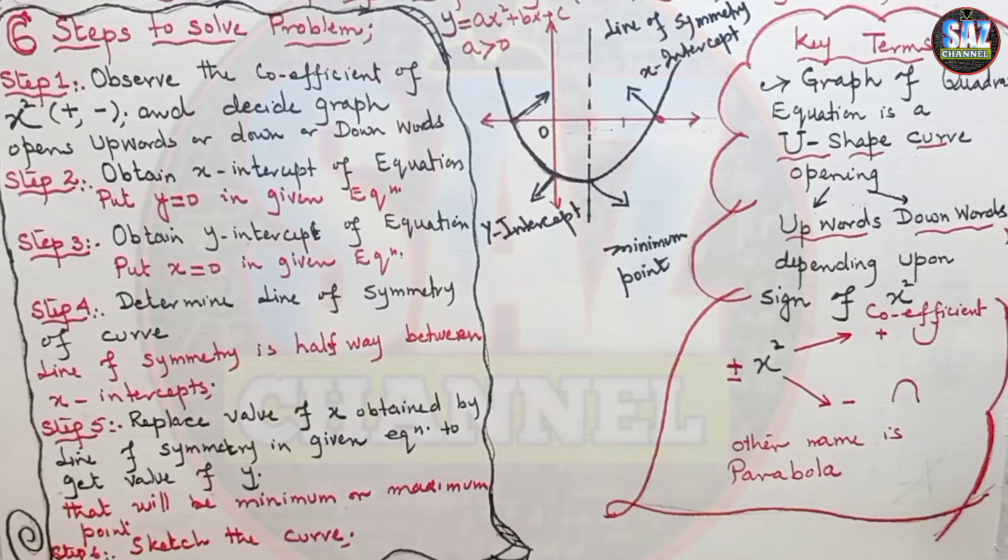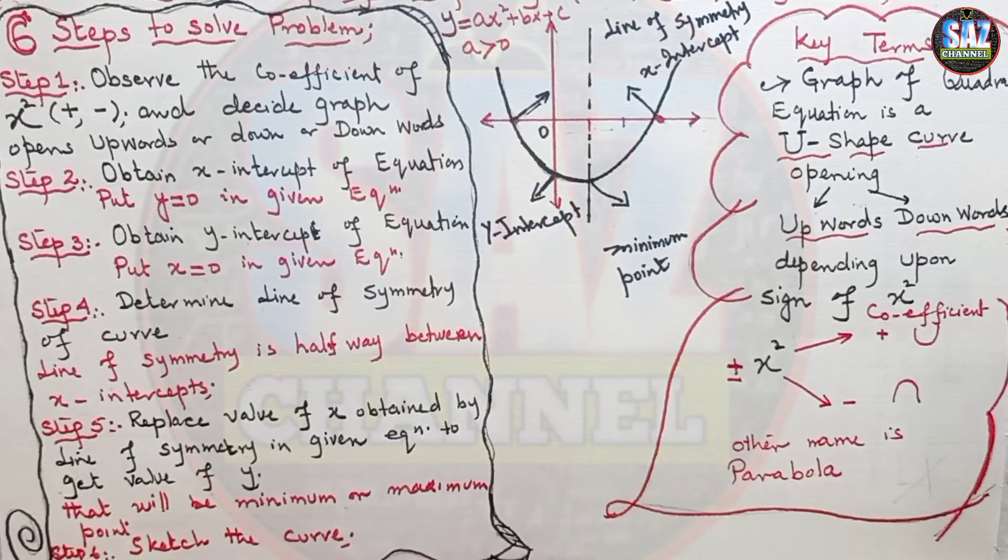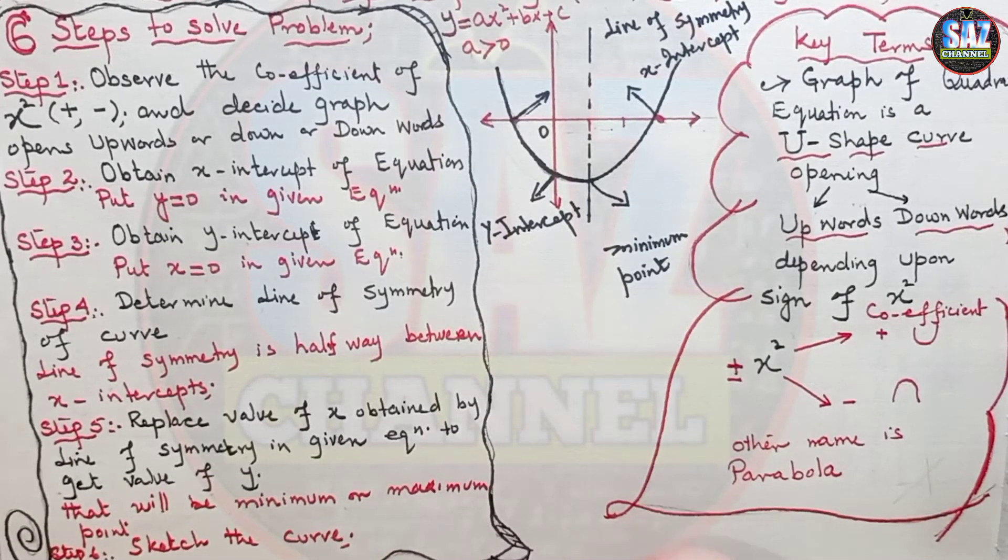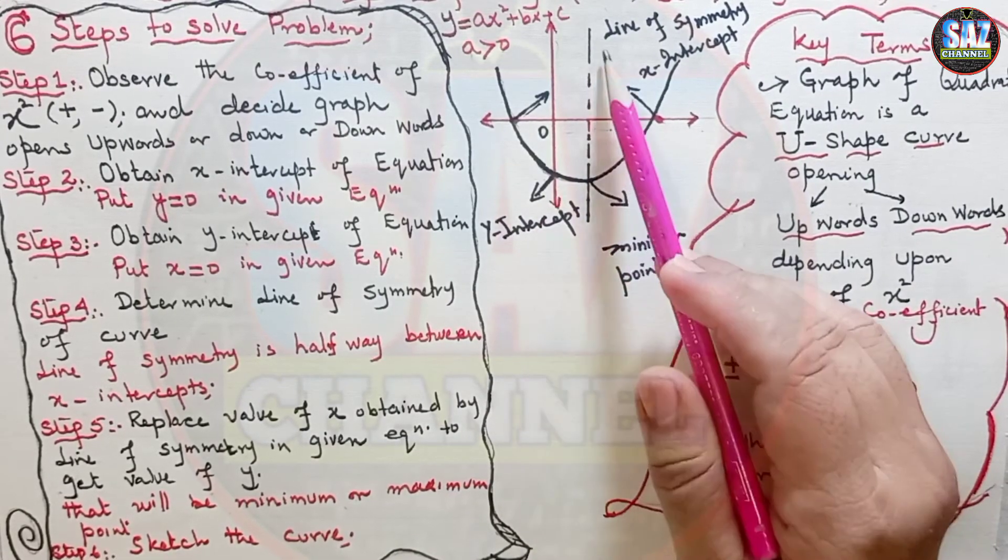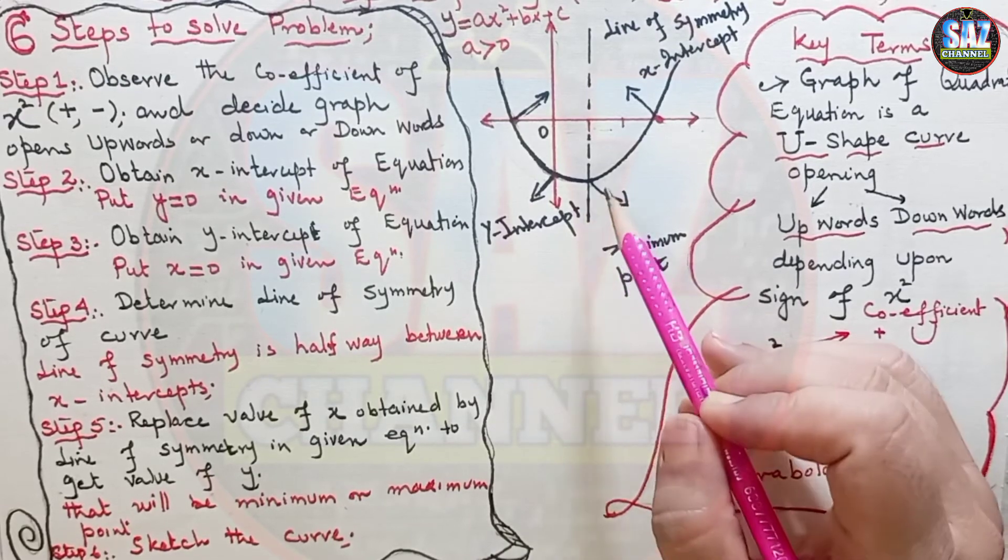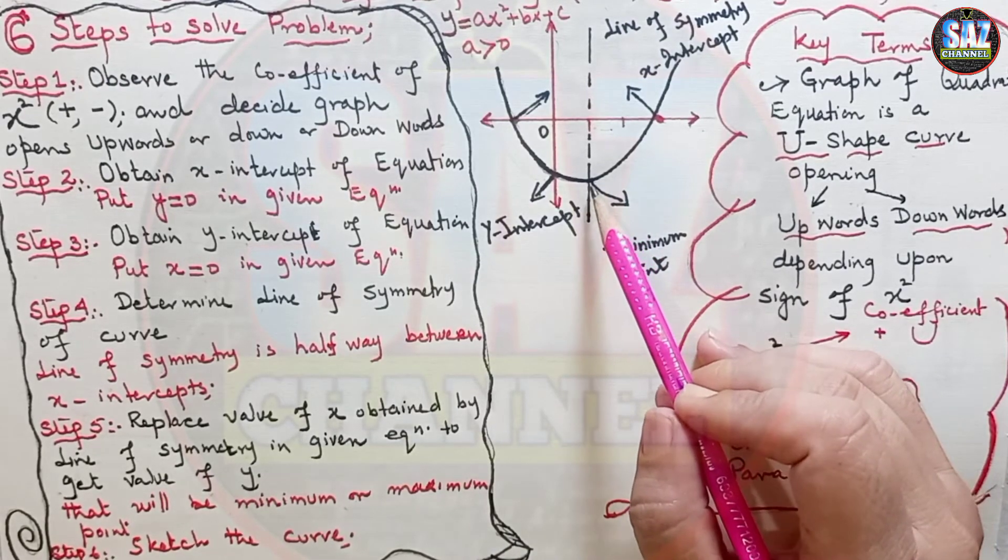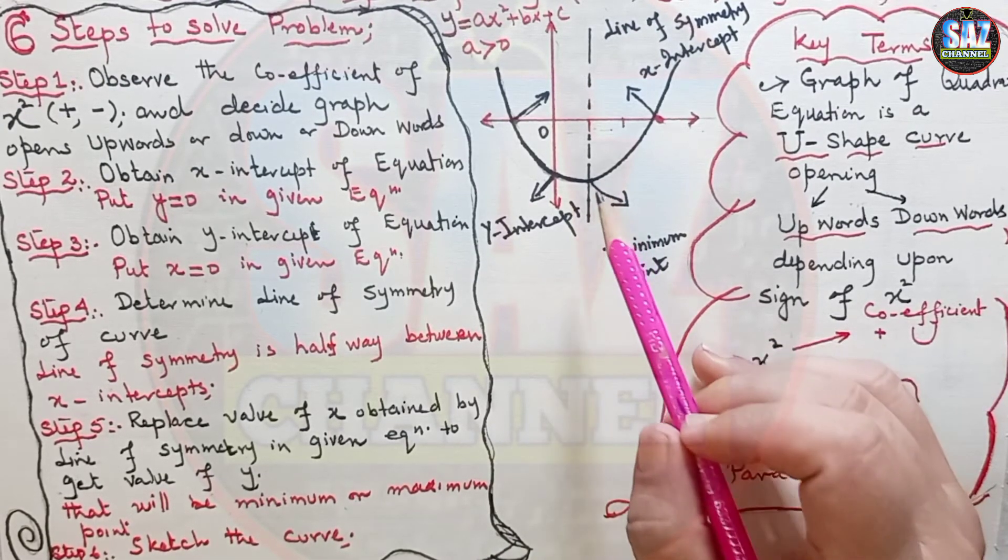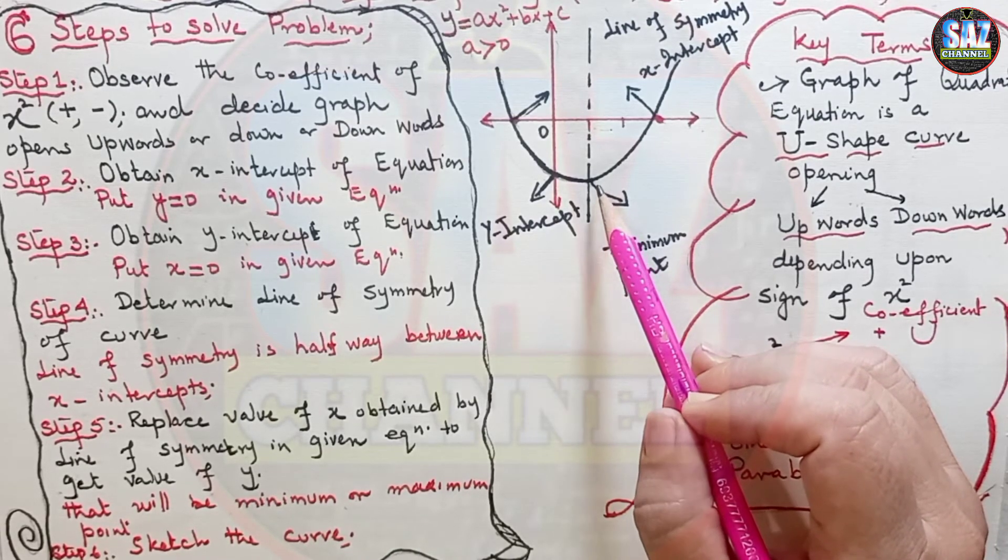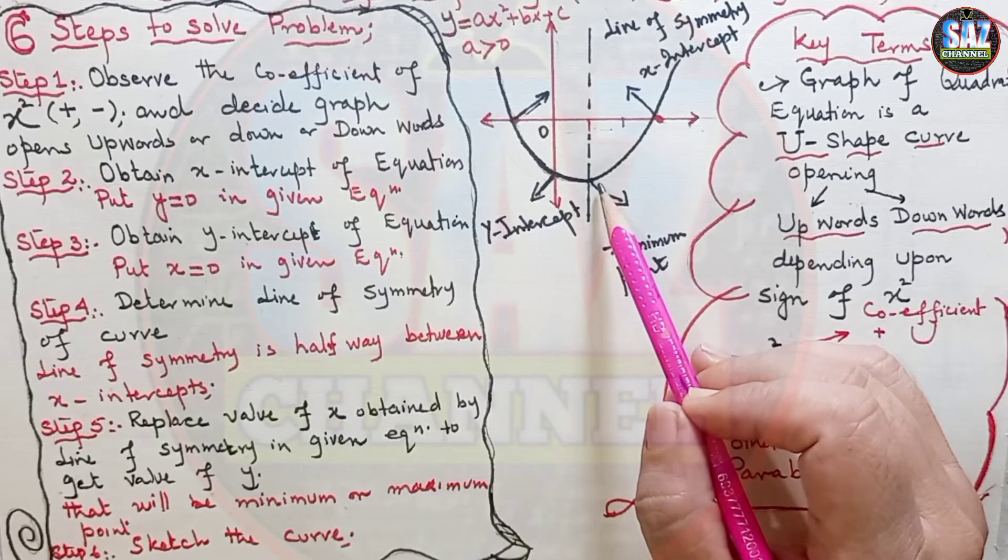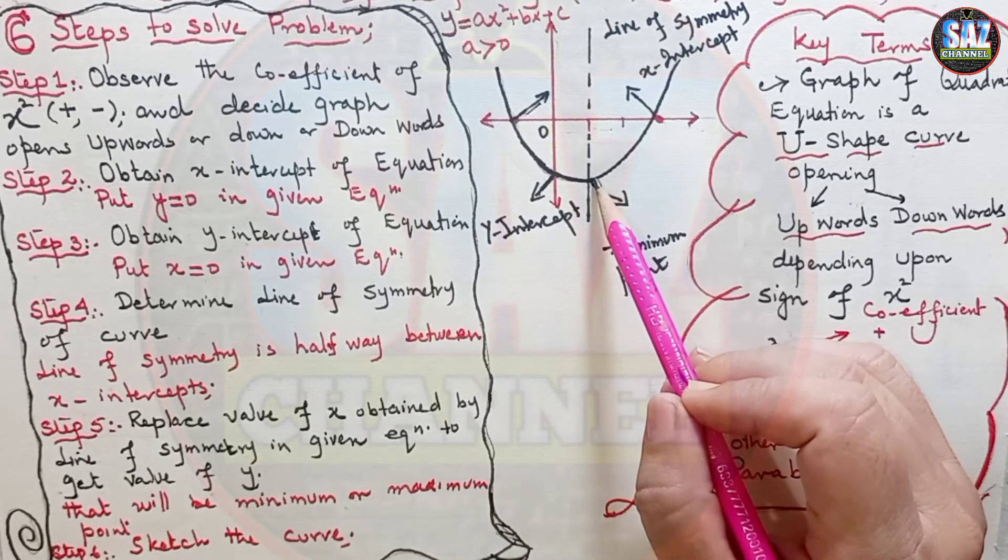And then in the last, what we have to do? We have to sketch the curve by marking x-intercepts, y-intercepts, line of symmetry, and minimum turning point. I hope the sketching of the graph of the form y equals (x minus h)(x minus k) or y equals minus (x minus h)(x minus k) is clear to you.